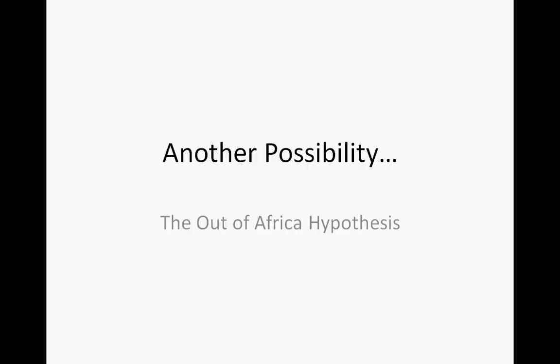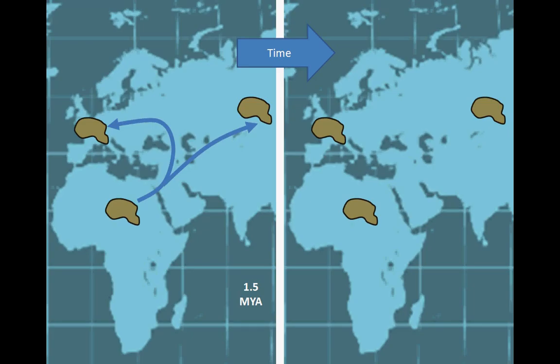An alternative hypothesis is the out of Africa, or replacement, hypothesis. This hypothesis proposes that following the initial migration by Homo erectus out of Africa, many hominid species developed on separate continents. Among these species were the Neanderthals.